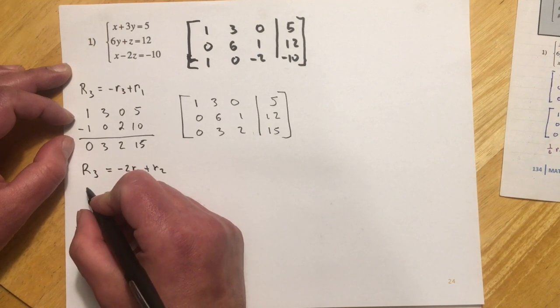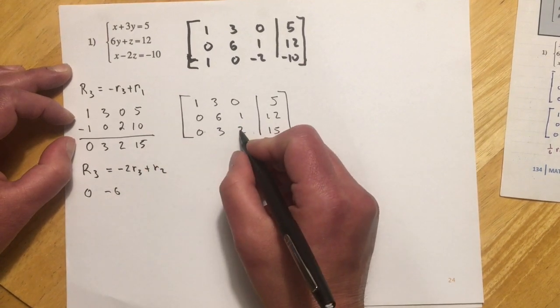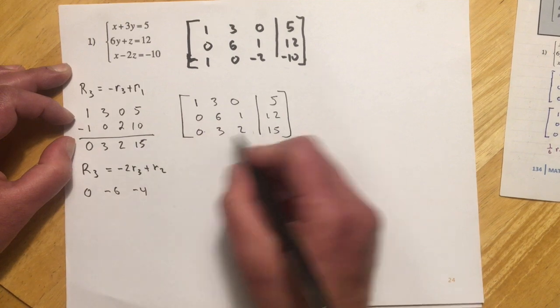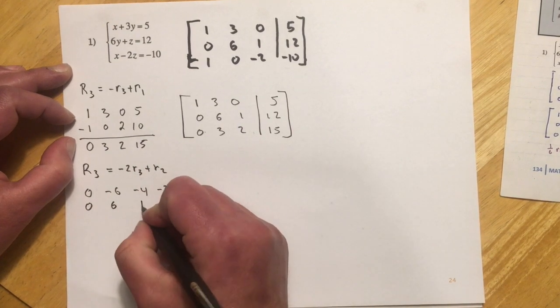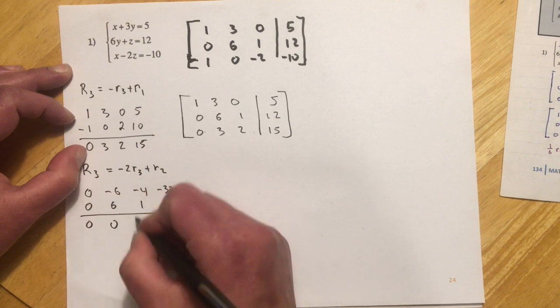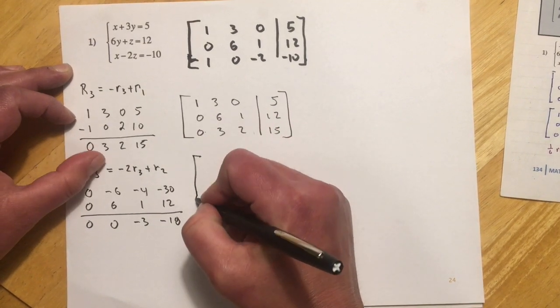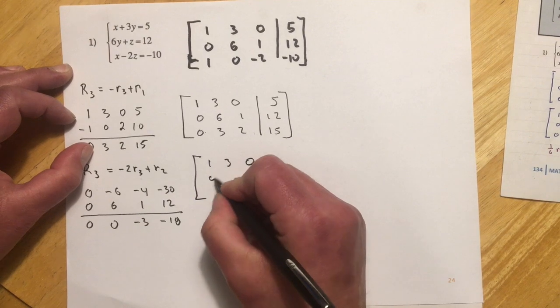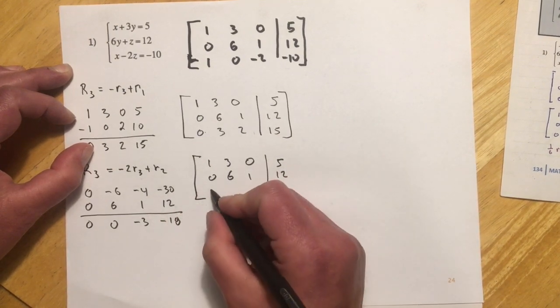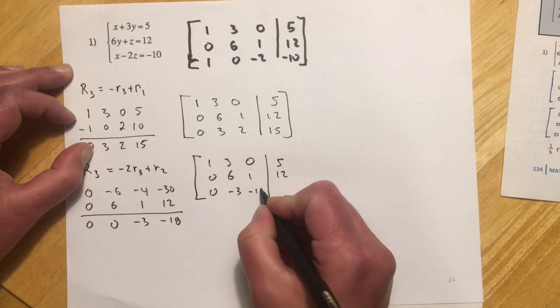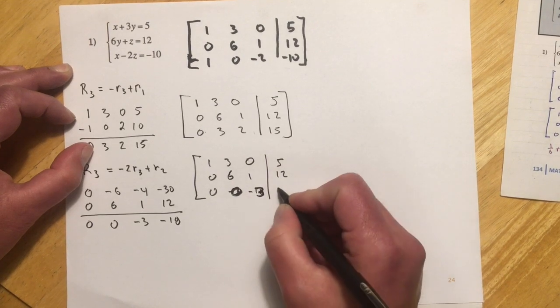And so that would look like 0, negative 6, and then negative 2 times 2, negative 4, and negative 2 times 15, so negative 30. And I'll just put row 2 under there. And that'd be negative 18. And let me rewrite it. And then this is our new one of these. That's a 0. That's my negative 3. And this is negative 18.